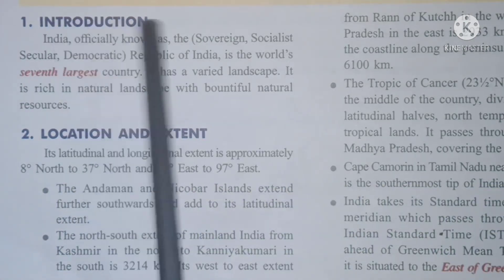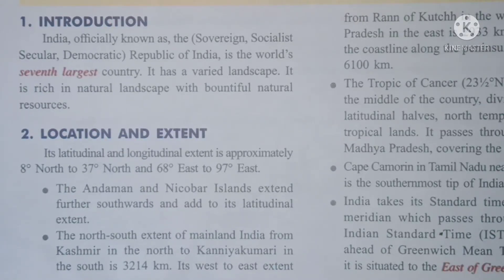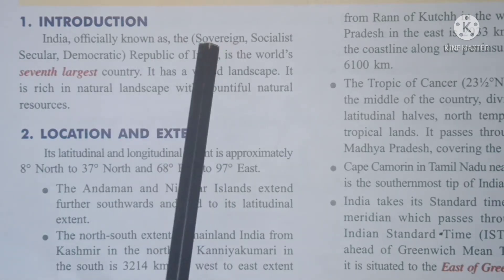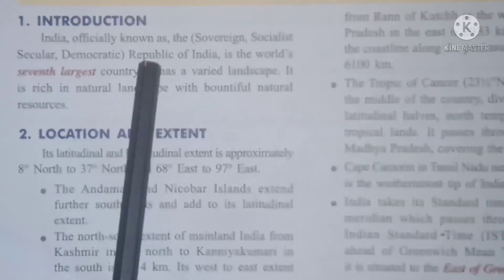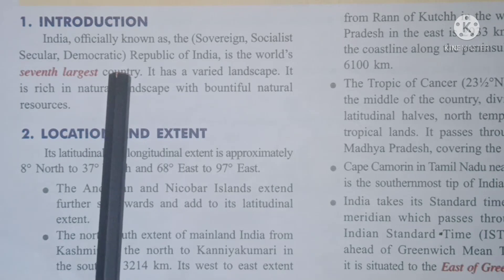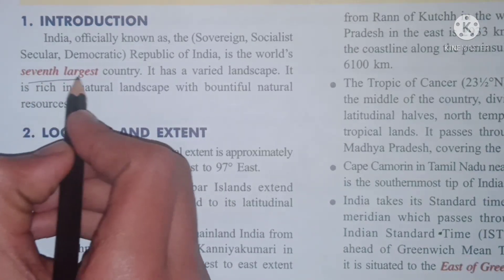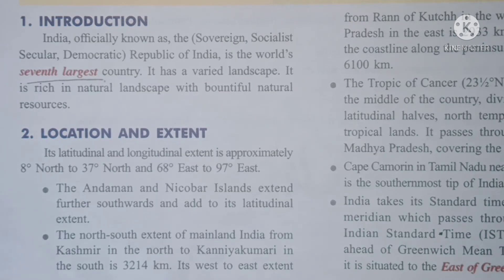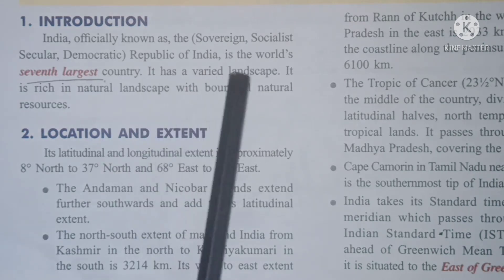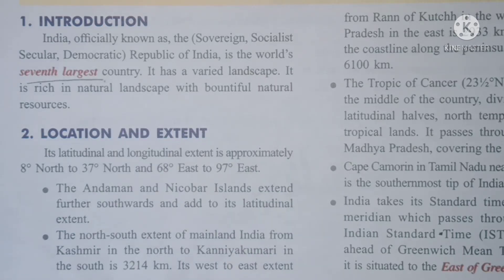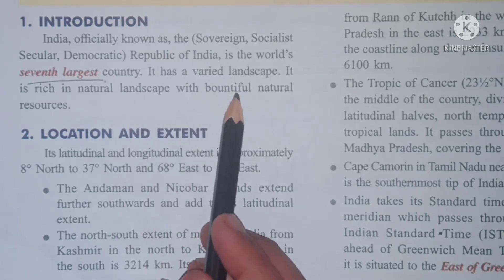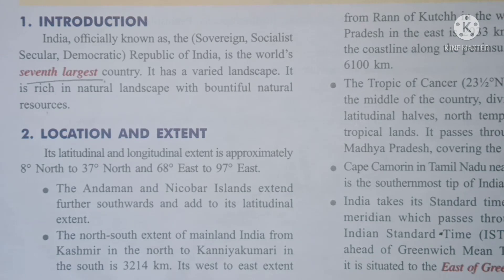Let me look at the introduction of India. We have read in the preamble of our constitution in class 7th history. India is officially known as the Sovereign Socialist Secular Democratic Republic of India. It is the world's 7th largest country. India has a varied landscape, meaning varied physical features. It is rich in natural landscape with beautiful natural resources.